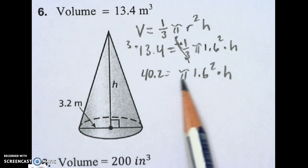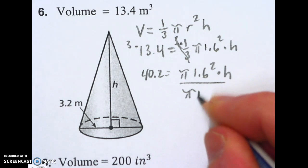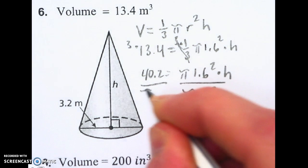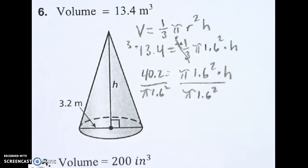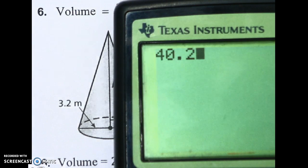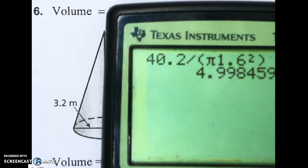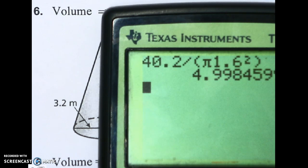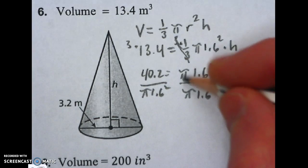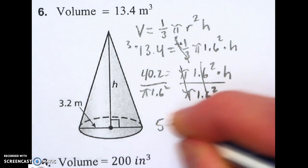Last step to get h by itself, I need to divide off this stuff that's multiplying by h. So, I'm going to divide both sides by pi and 1.6 squared. Here's how we punch it into the calculator: 40.2 divided by, and then you need parentheses here, pi and 1.6 squared, and then end your parentheses. That will round up to 5. So, our height, because it's cancelled out as 1, is about 5 meters.